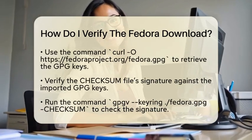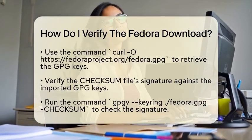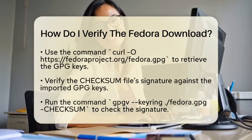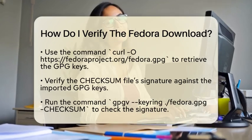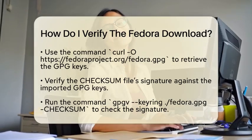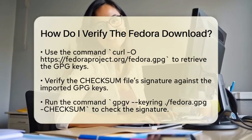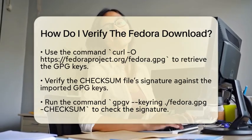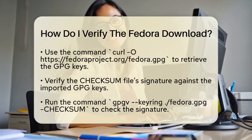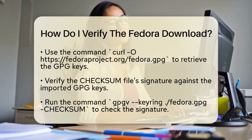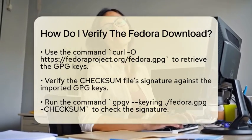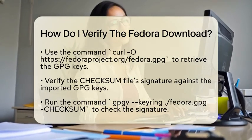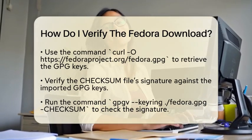Next, you will need to import Fedora's official GPG keys to your system. These keys are crucial because they allow you to verify the digital signature of the checksum file. To import the keys, you can use a simple command in your terminal. Just type: curl getfedoraproject.org/fedora.gpg. This command retrieves the GPG keys from Fedora's official site.